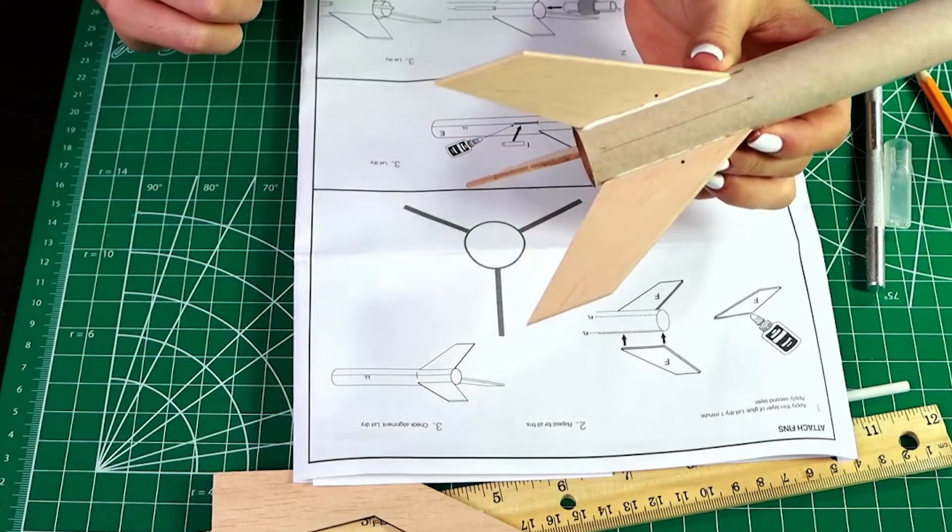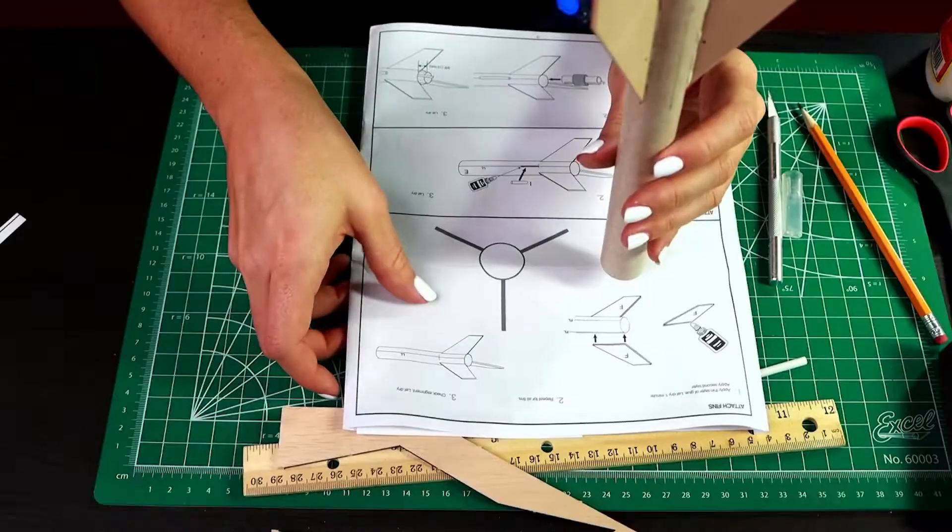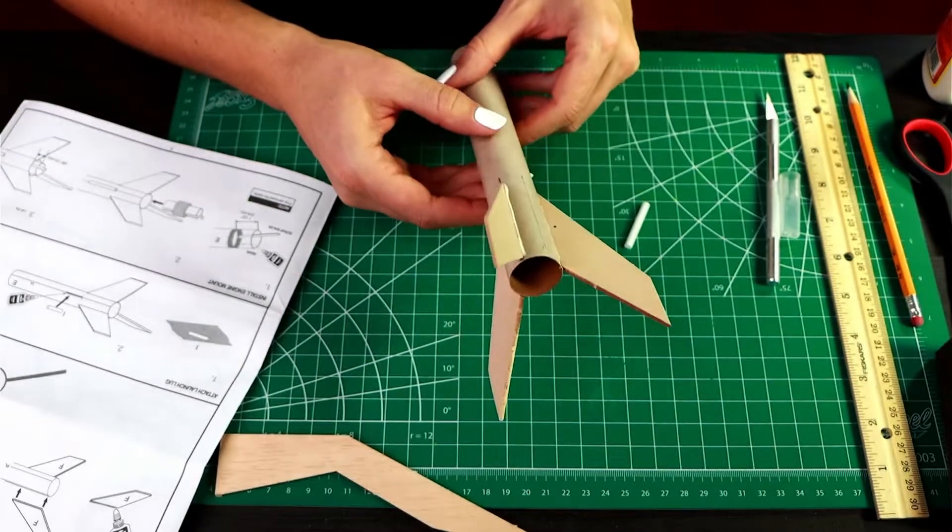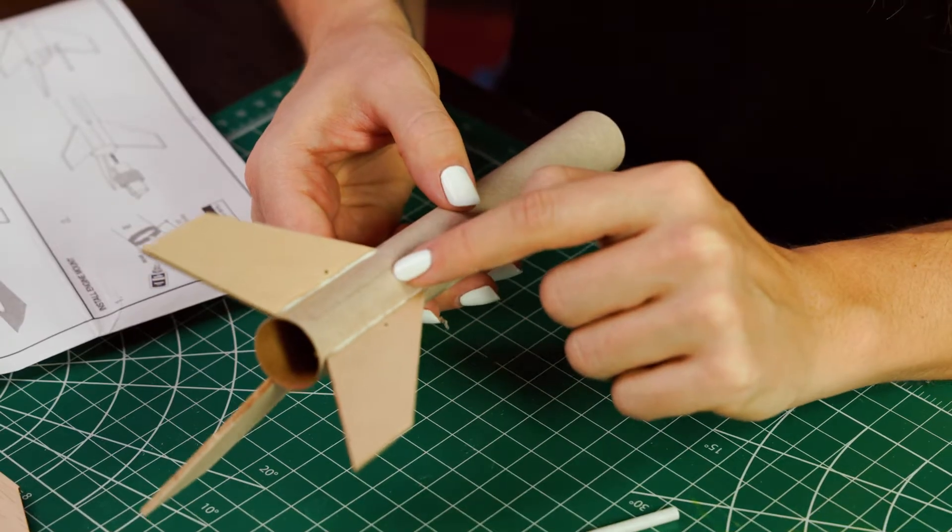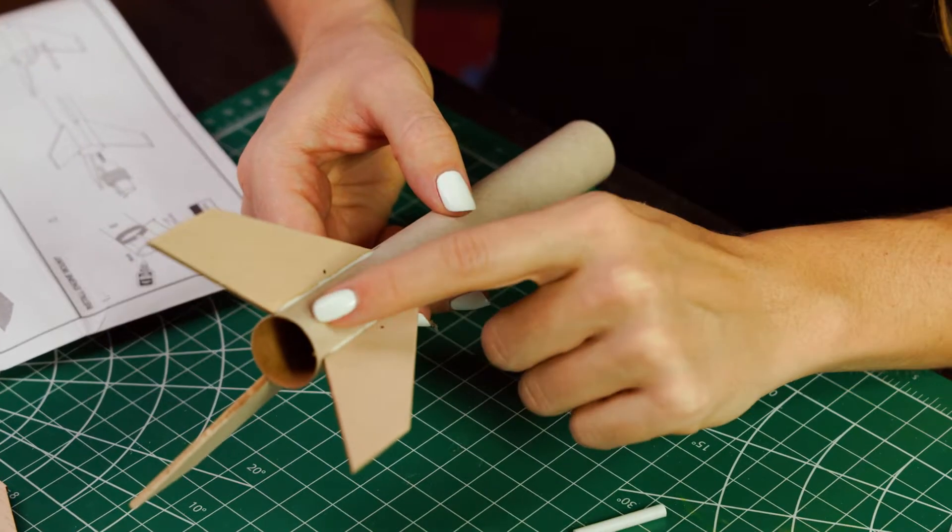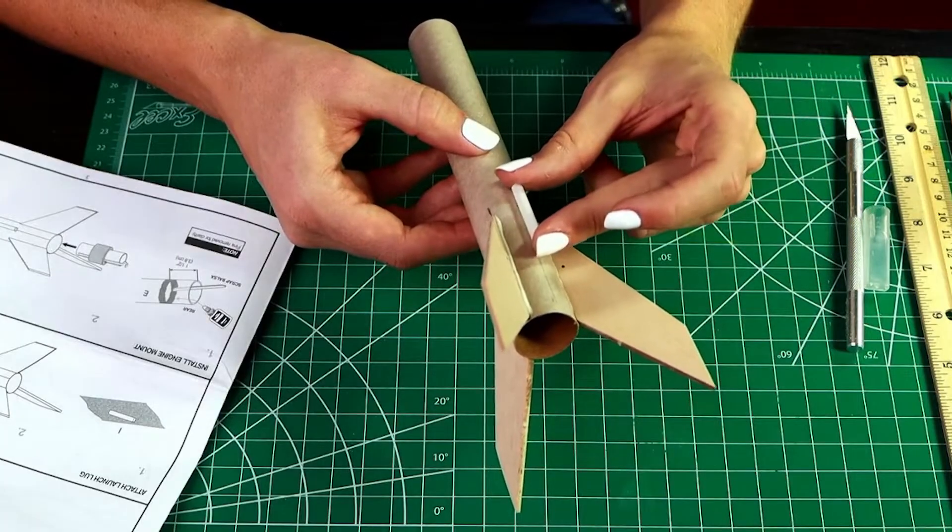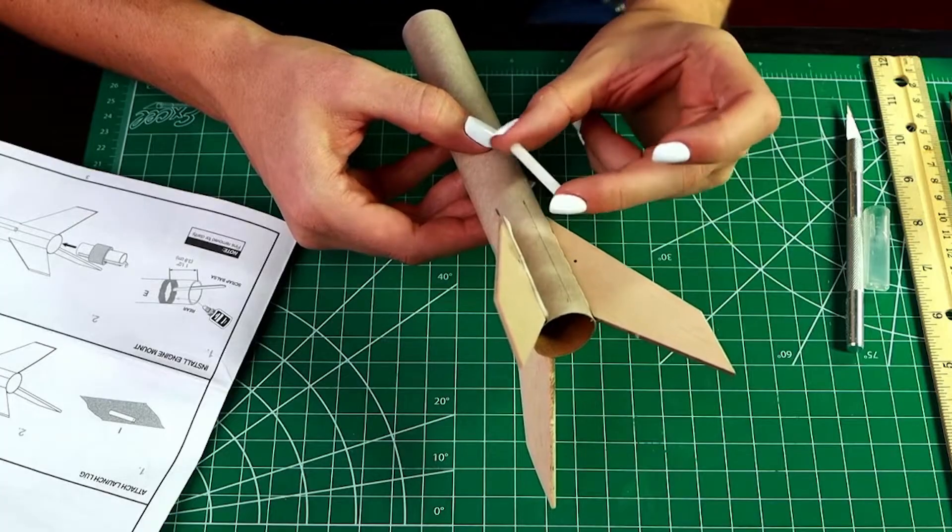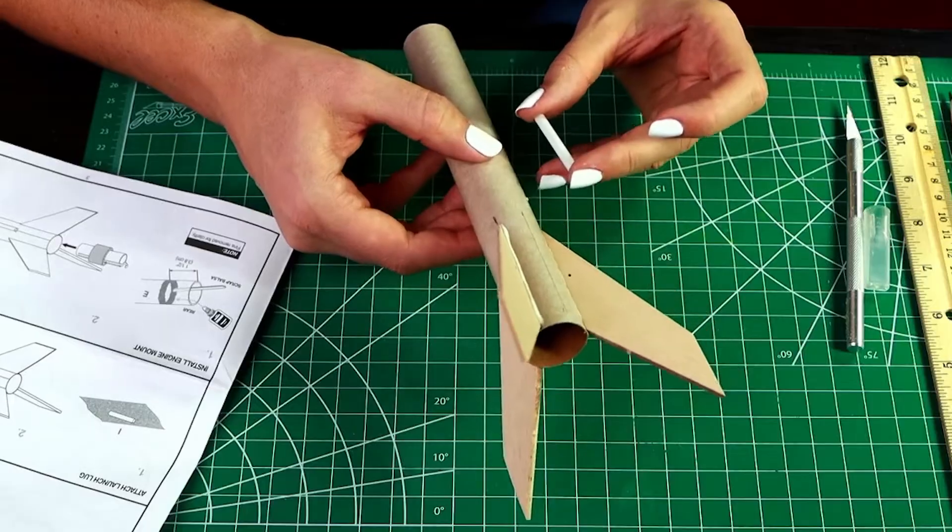Once you have aligned your fins, then you want to set this somewhere safe or set it kind of upright like this and just let those dry for a minute. While these fins are drying, we can also attach the launch lug. That's our other line we have on the body tube. The instructions say to go to about one and three quarter inches up from the end. Make sure that you get your launch lug parallel with the body tube. You don't want it to be tilted at all because that's going to affect how it actually takes off of the launch pad.